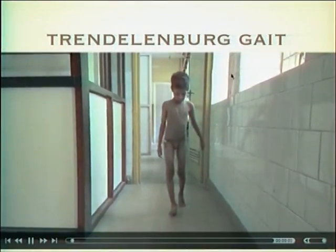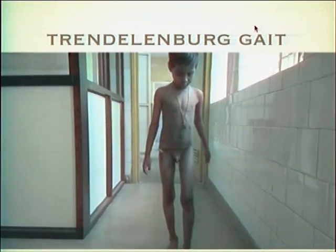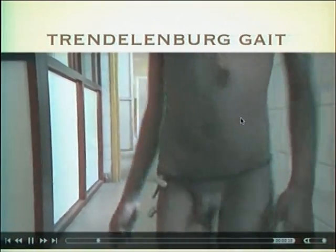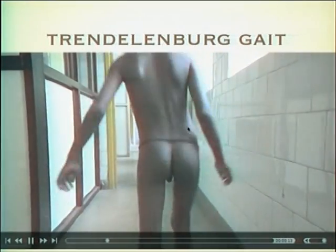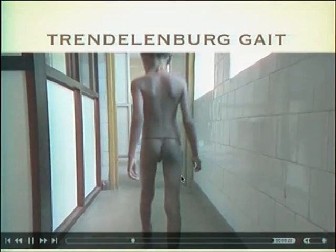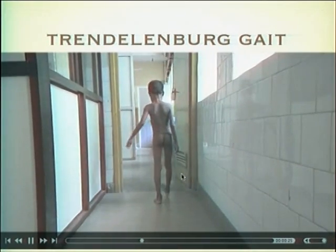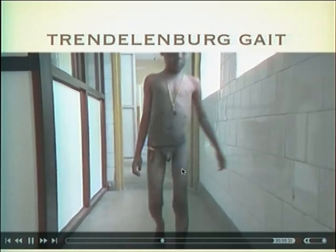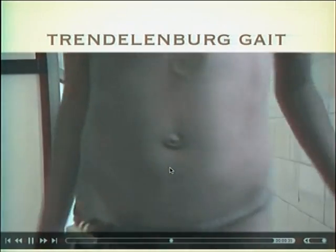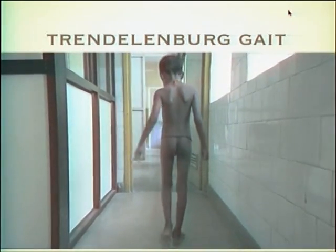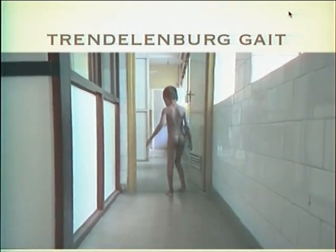Coming to the Trendelenburg gait - there was a nice discussion yesterday on the biomechanics of this. This boy has very kindly demonstrated the gait. You can see the pelvis drop on his right as he stands on his left, and how his spine goes to the left - classical Trendelenburg. As he weight-bears on the normal limb, the pelvis drops to the opposite side. The center of gravity shifts towards the right, and then he shifts his spine back towards the same side so that his center of gravity is shifted back.